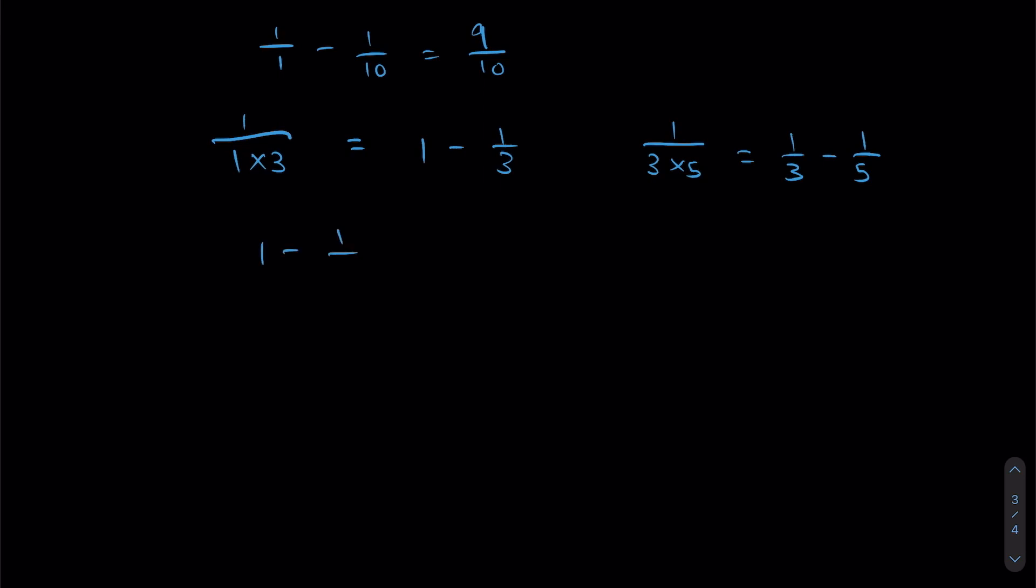It will be 1 over 1, 1 minus 1 over 3 plus 1 over 3 minus 1 over 5 and so on and so forth.